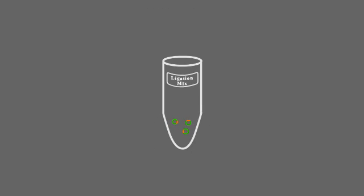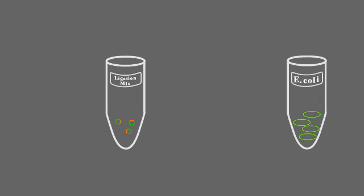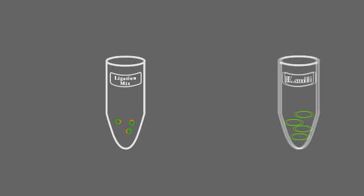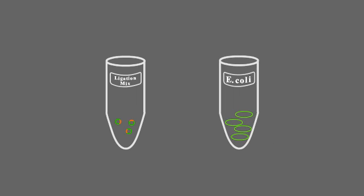In order to make multiple copies of this molecule, the ligation mix is introduced inside the E. coli cells in a process called transformation.